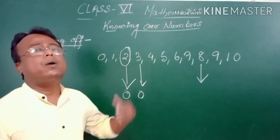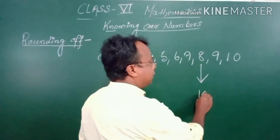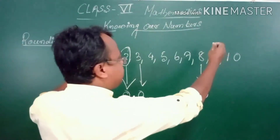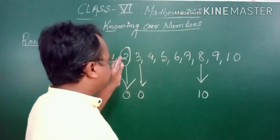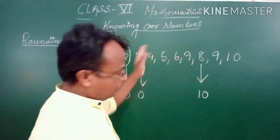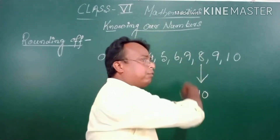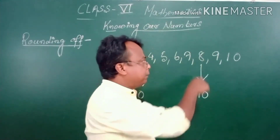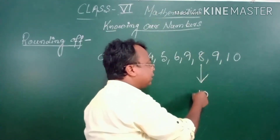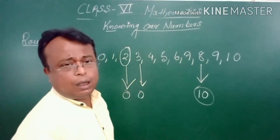So what I will do? I will round up this 8 to 10. We are rounding up between 0 and 10, and we have to see whether the number is nearer to 0 or 10. The number which is nearer — we round up to that number. So 8 is rounded up to 10. That is called rounding up.